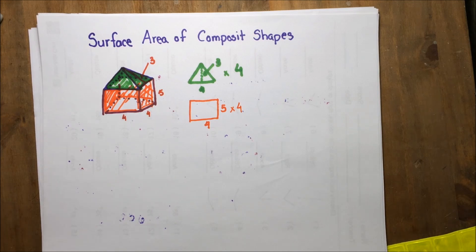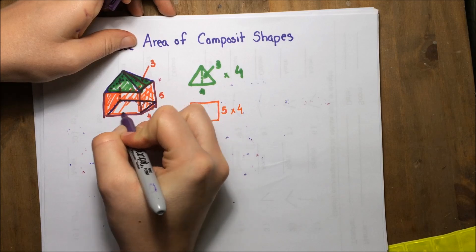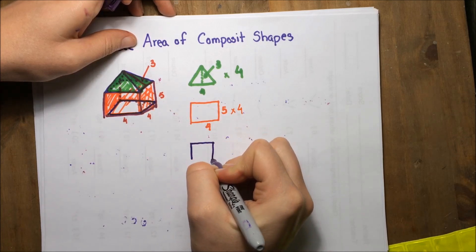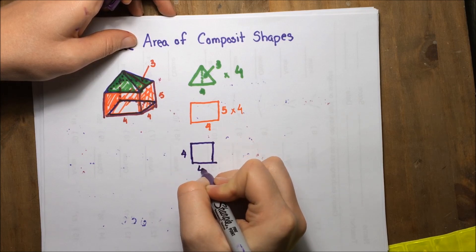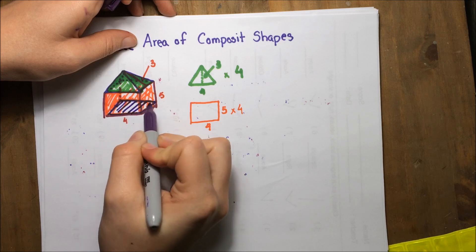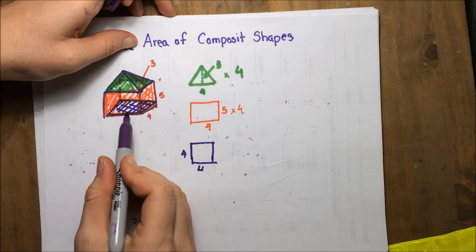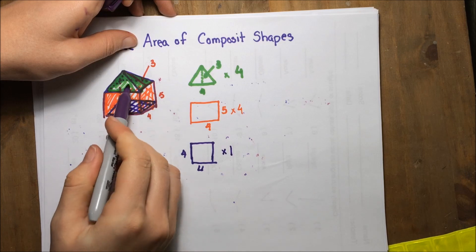One more is this shape right here, that square that makes up the base. We are only doing the ones on the outside, the ones you'd be able to touch. There's only one of those, right, because we're not counting the one up here.